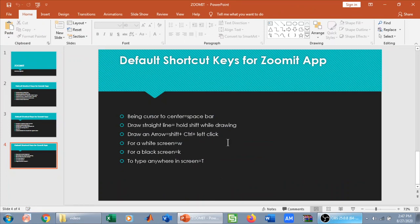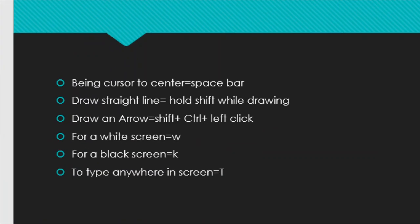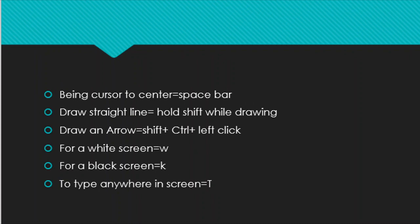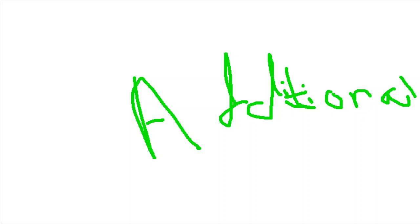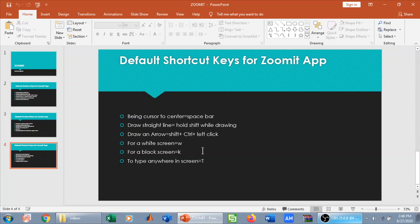For the white screen and black screen features: while in zoom in mode, press W to turn on a white screen where you can give students additional information. Press Escape to get rid of the white screen. Similarly, press B for a black screen and again you can provide additional information, then press Escape to exit.